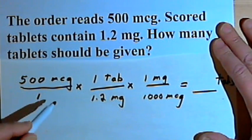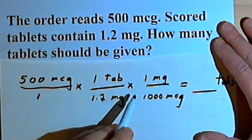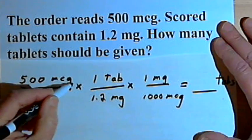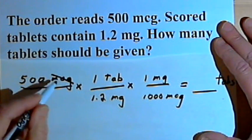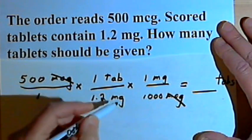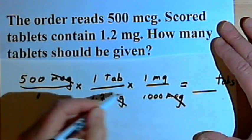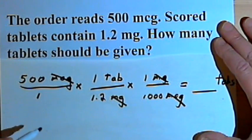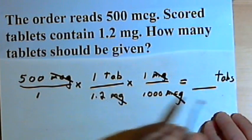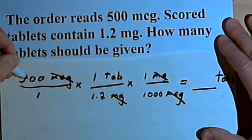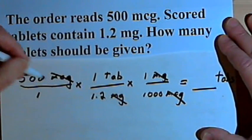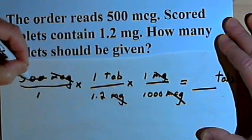Now I want to see if I can cancel out all the units except for the tablets. So I can cancel out micrograms over here from the numerator and the denominator. I can cancel out milligrams. I'm left with just tablets, and that's what I want to end up with. I can simplify the 500 and the 1,000, I'll just divide those by 100.